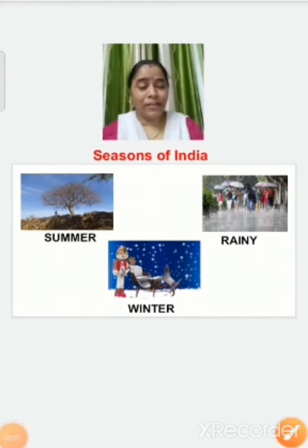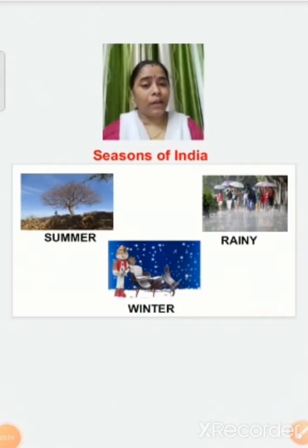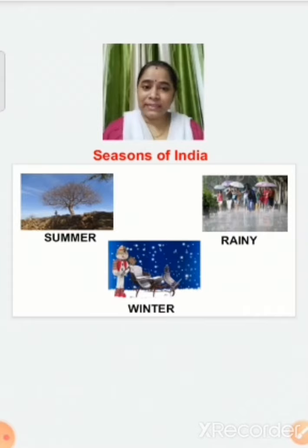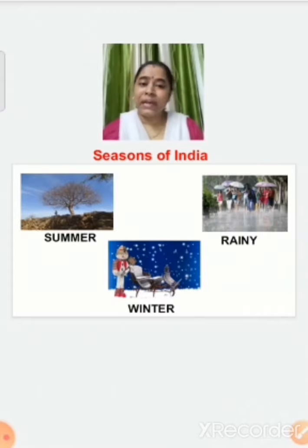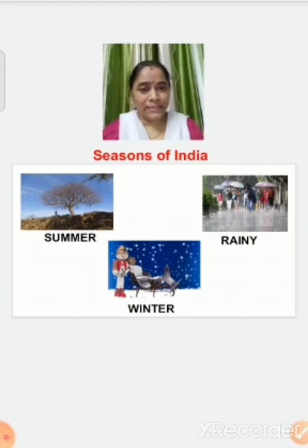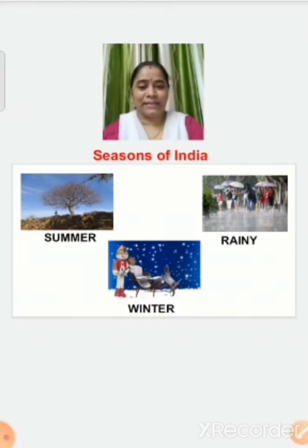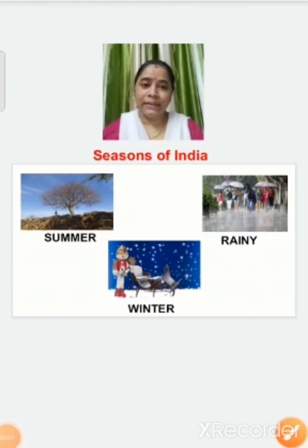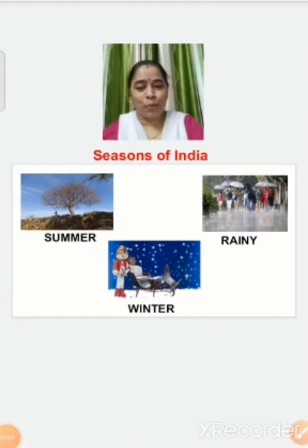But children, you know outside India, around the world, there are four seasons. They are spring season, summer season, autumn season, and winter season. Now let's understand these seasons one by one.